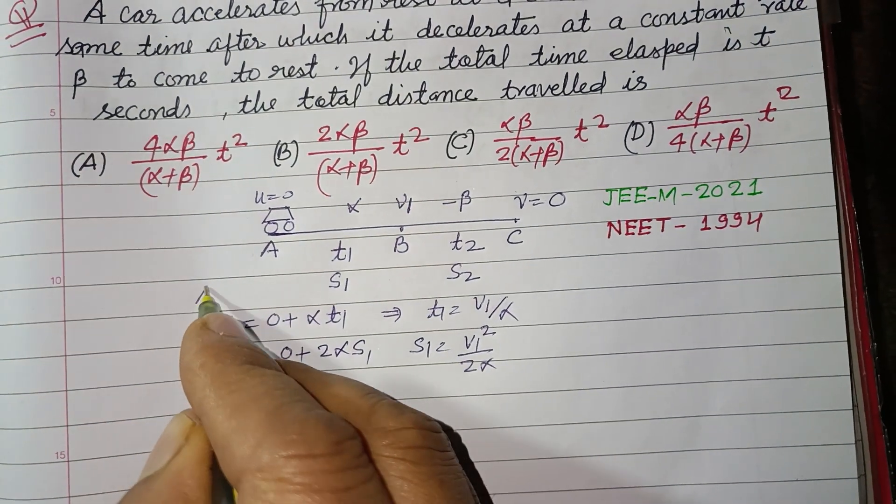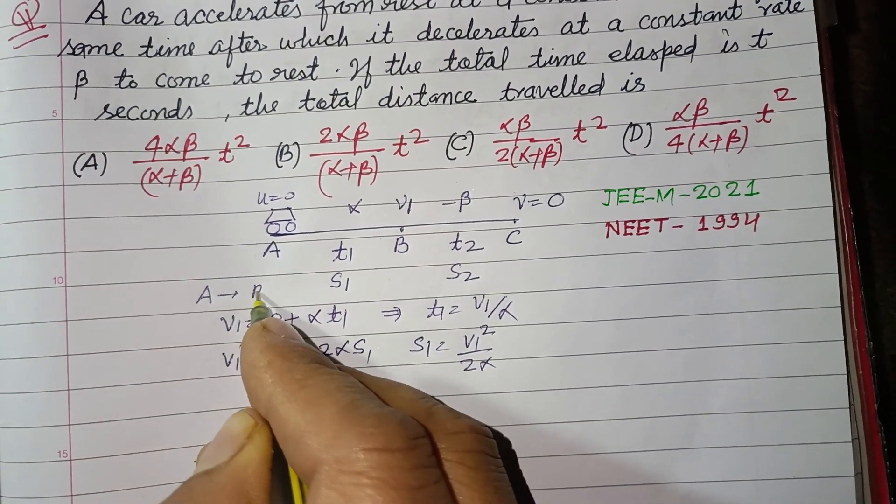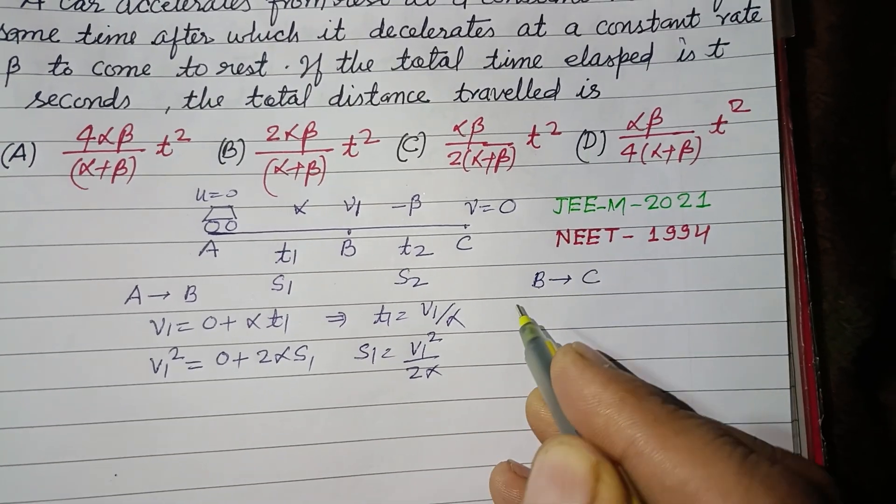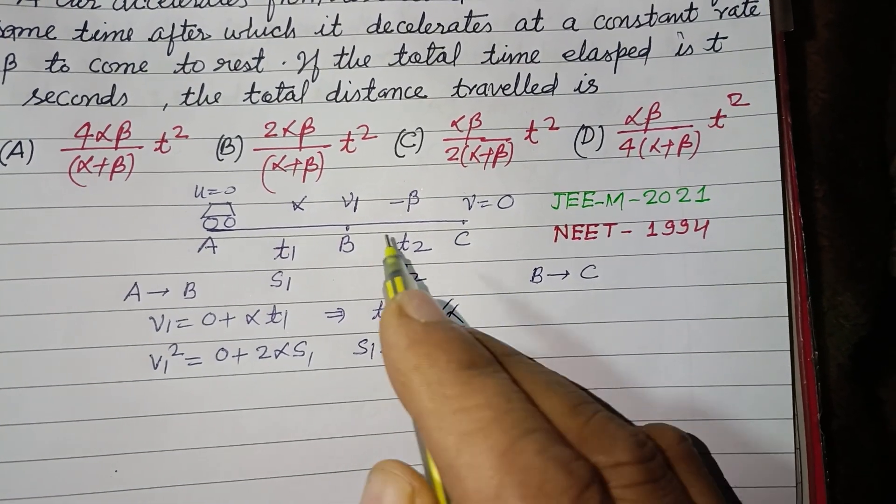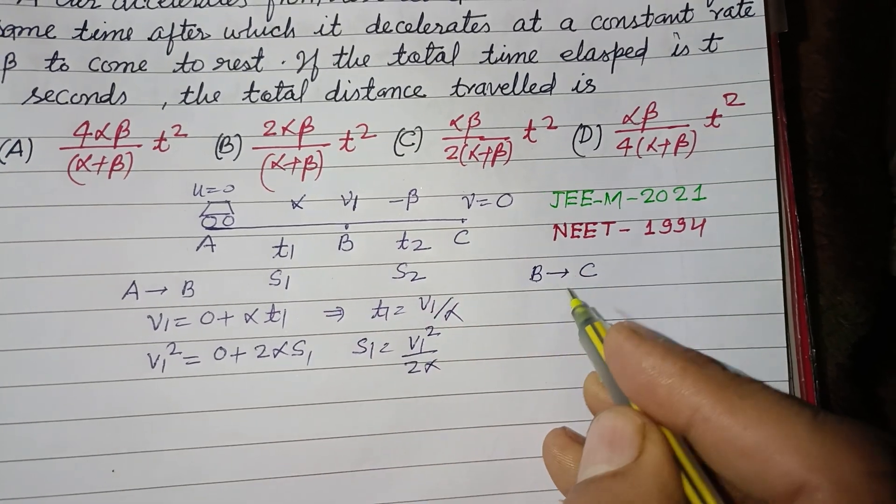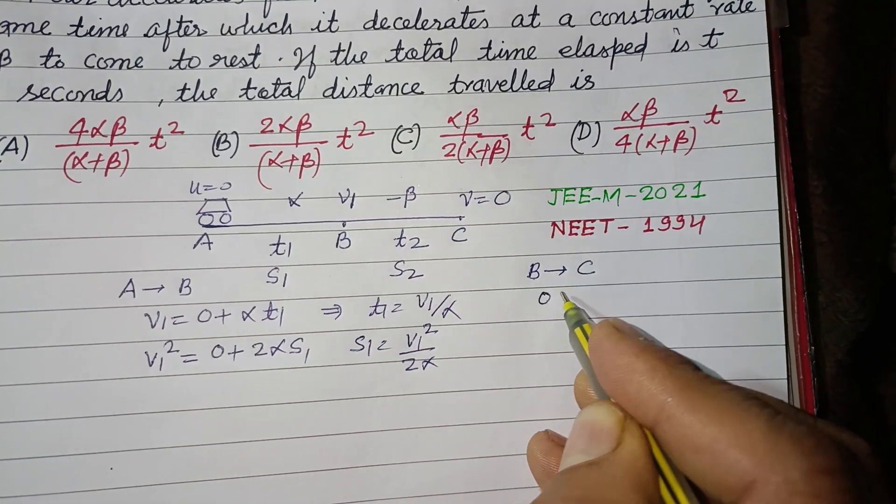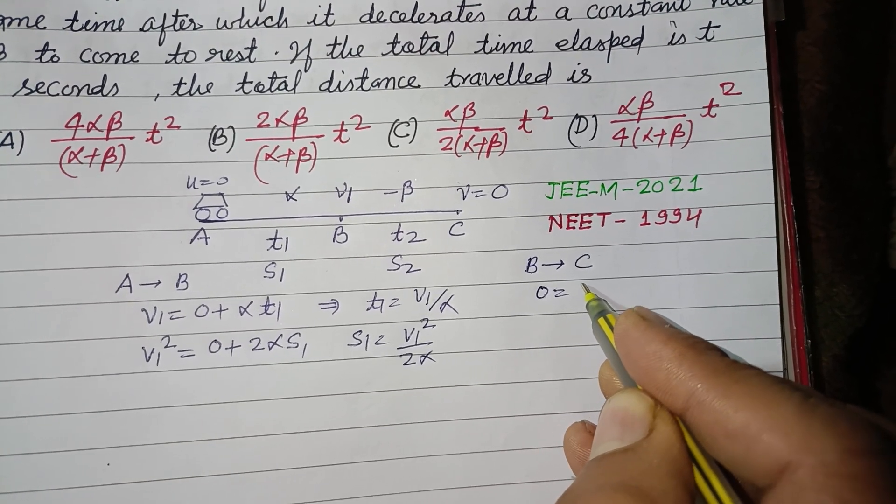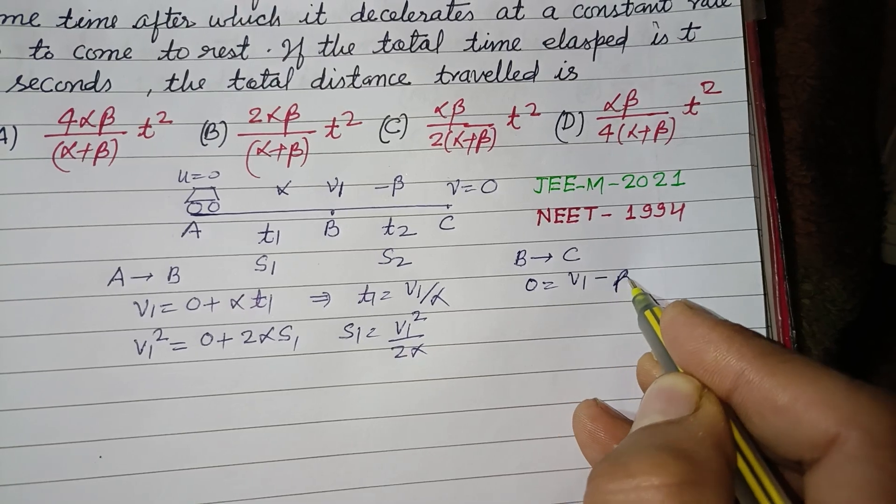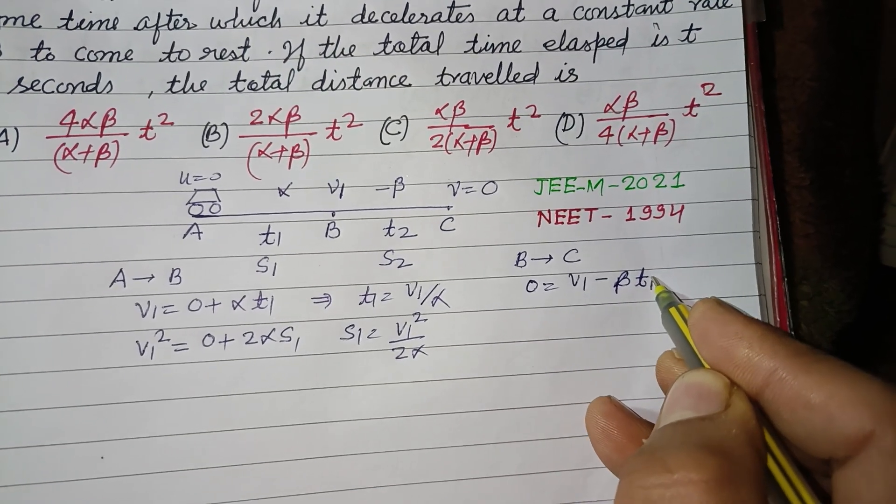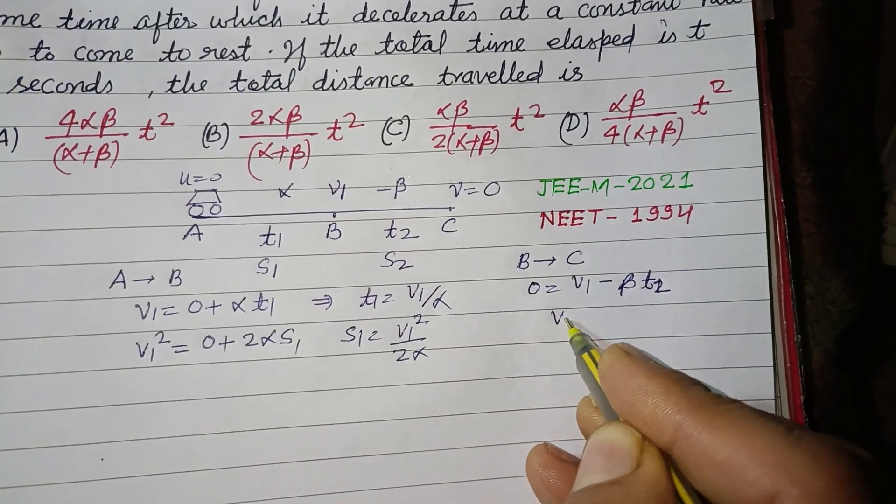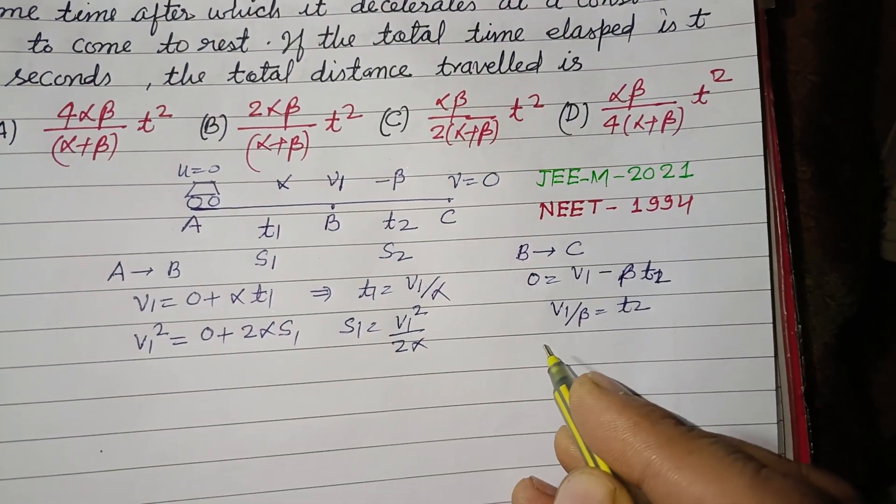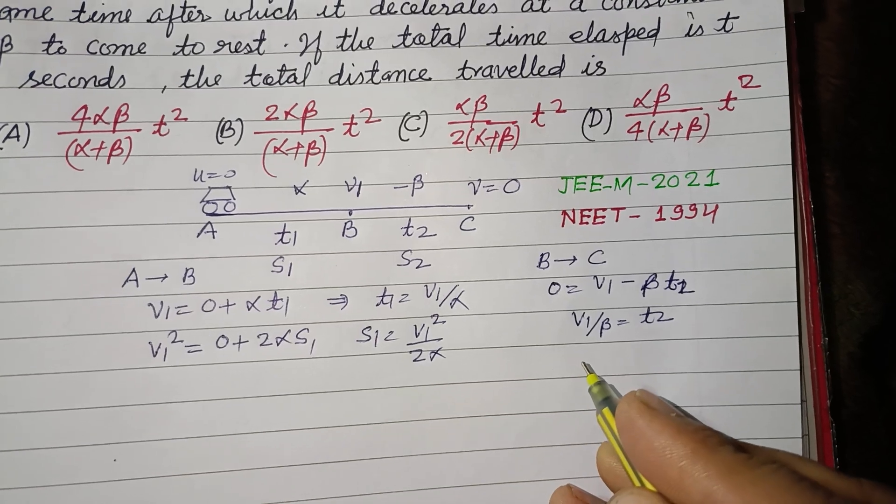Now this is motion from A to B. Now considering motion from B to C, its initial velocity is v₁ and final velocity is 0. So 0 = u - βt₂, where u is v₁. Thus v₁/β = t₂. Similarly, using the third equation: